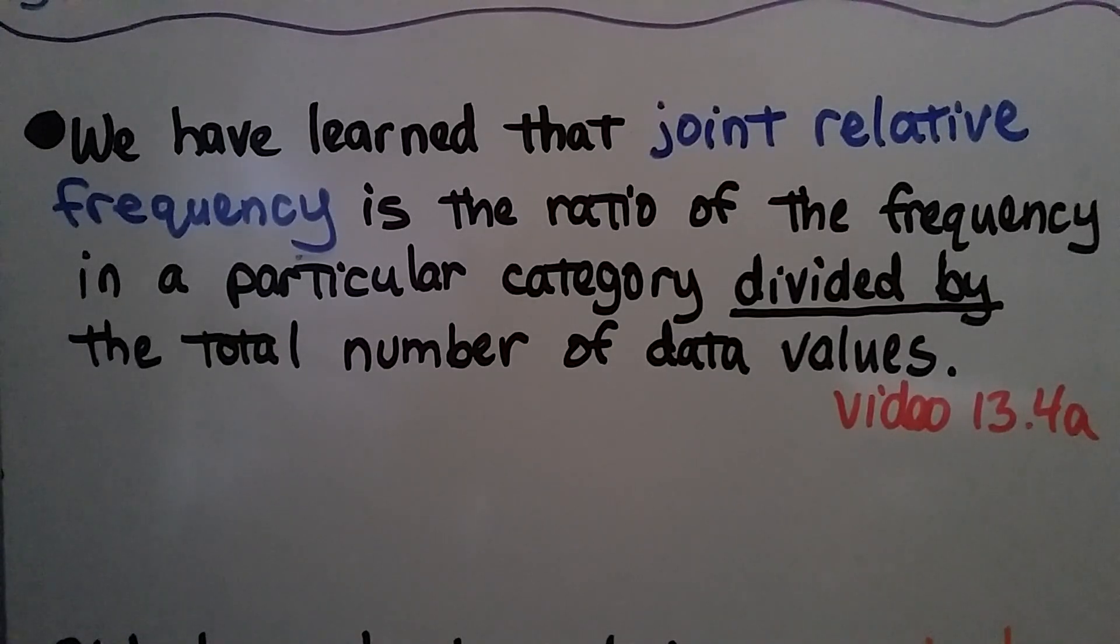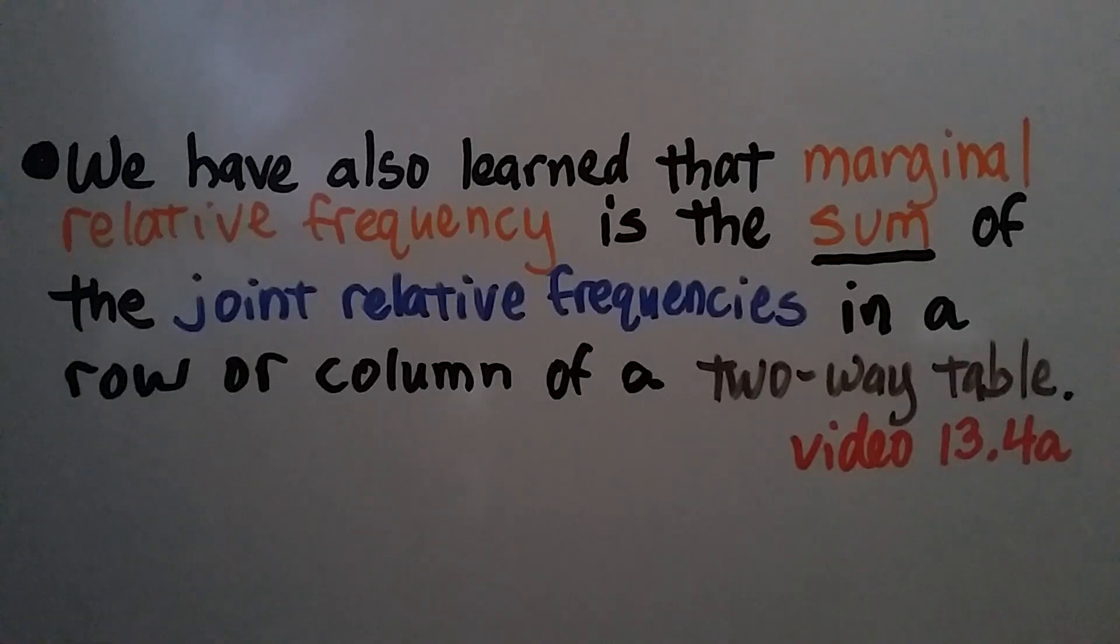We just learned that joint relative frequency is the ratio of the frequency in a particular category divided by the total number of data values. We've also learned that marginal relative frequency is the sum of the joint relative frequencies in a row or column of a two-way table.